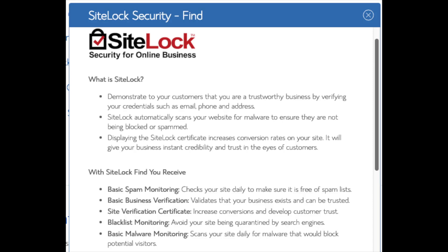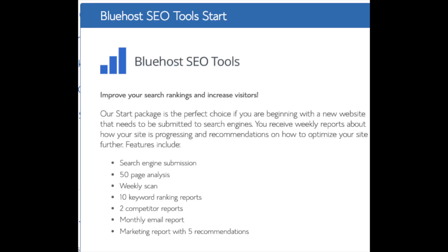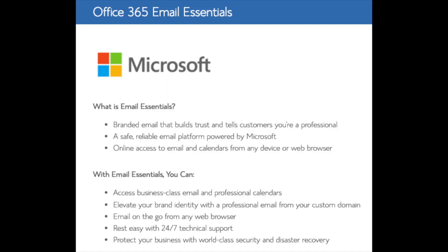SiteLock Security Find is security for your WordPress website and protects it from hackers — I don't like this as there are really good free alternatives. CodeGuard creates daily backups and allows you to restore your site with a click of a button in case something happens, though there are free alternatives that work just the same. SEO Tools Start you can keep unselected — this addon submits your site to search engines, which you can do for free. Office 365 Email Essentials is Microsoft Outlook email software; keep it selected if you'd like that. All these addons are completely optional and up to you.